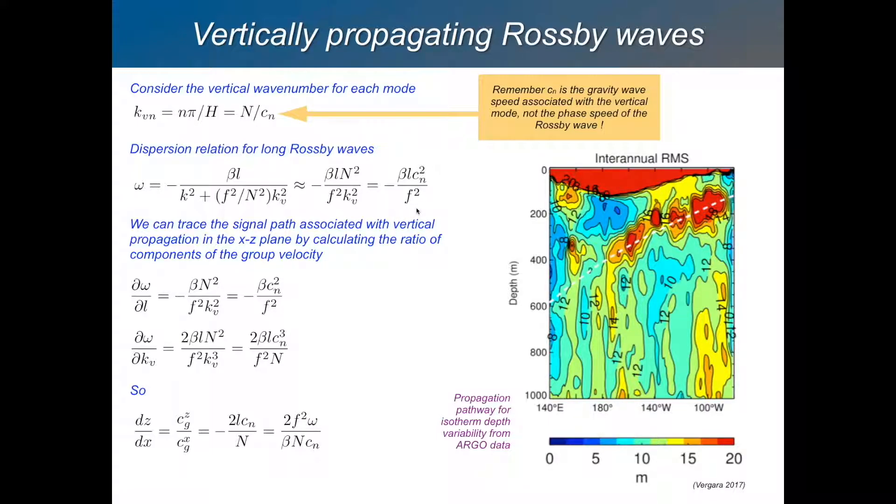And then you can then say, well, what's the group speed for this Rossby wave in the horizontal and in the vertical? And the group speed is d omega by dL in the zonal direction. And it's d omega by dKV in the vertical direction. The d omega by dL is very straightforward. The d omega by dKV is also pretty straightforward. And then if you look at the ratio between the two group speeds, that will give you the slope at which the energy will propagate. And you can actually trace the direction of propagation of perturbation.